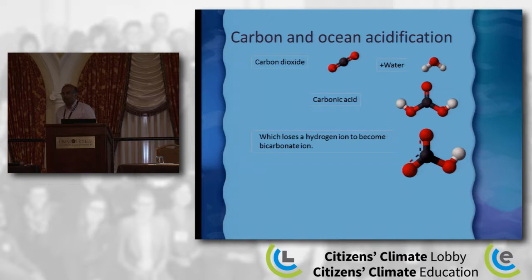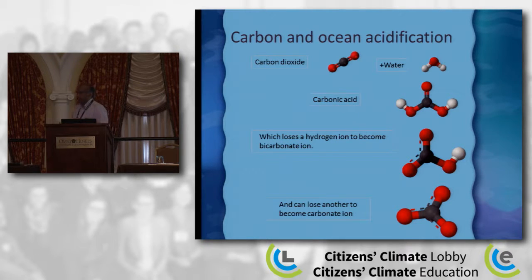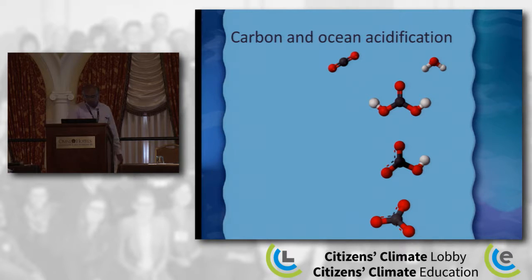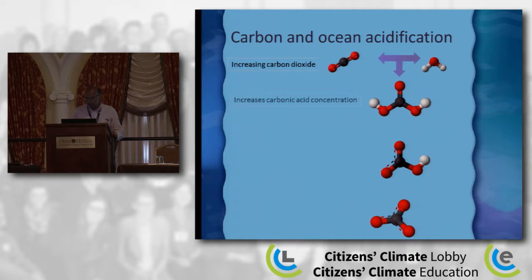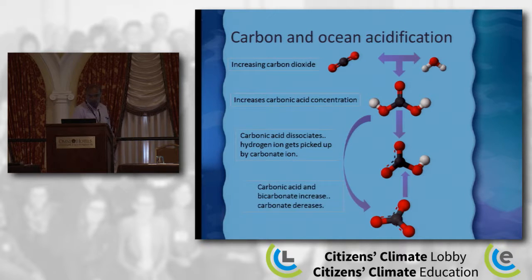An acid is a chemical that can lose a hydrogen ion when put in water. Carbonic acid loses its hydrogen ion to become a bicarbonate ion — bicarbonate is baking soda. It can lose yet another one to become a carbonate ion. Carbonate ions form part of calcium carbonate, which is chalk — the material that makes up the shells of many marine organisms. When we put more carbon in the ocean, we increase CO2, which combines with water to form carbonic acid. That has increased about 40% since pre-industrial times.